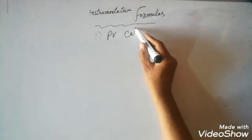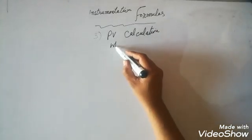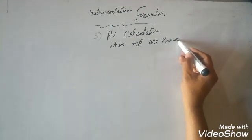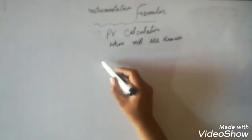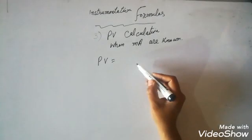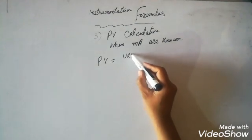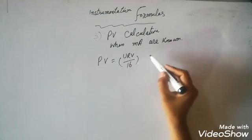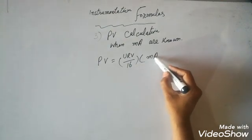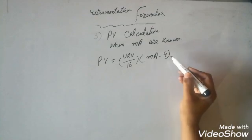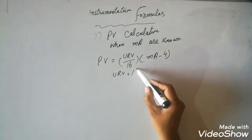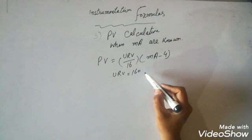Our next formula is how to calculate the PV if we know the milliamps of a transmitter. When we have the milliamps, we can convert that into the PV. The formula is: PV = (URV / 16) × (milliamps − 4). By this formula we can calculate the process value.